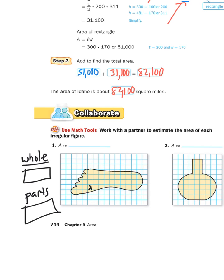Let's see how you did. Counting the whole squares starting at the top: one, two, three, four, five, six, seven, eight, nine, ten, eleven — skipping that partial one — twelve, thirteen, fourteen, fifteen, sixteen, seventeen, eighteen, nineteen, twenty, twenty-one, twenty-two, twenty-three, twenty-four, twenty-five, twenty-six, twenty-seven, twenty-eight. I got 28 whole squares.